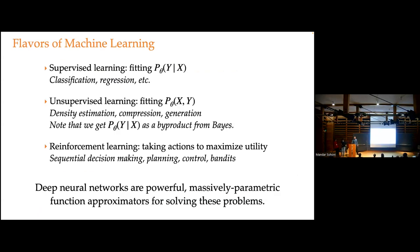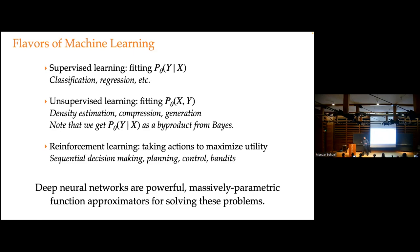I'm going to start at a really high level because I think it's useful to create context. This is coming from the perspective of somebody who's been doing machine learning research since before it was cool. We broadly break things down into three different categories. We think about supervised learning — things like classification and regression — where we're essentially trying to learn some parametric conditional probability distribution. We also like to do unsupervised learning, where we model a joint distribution over everything.